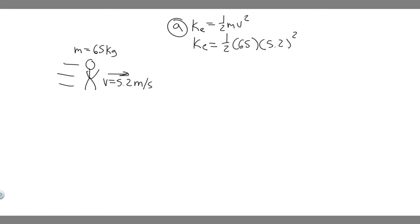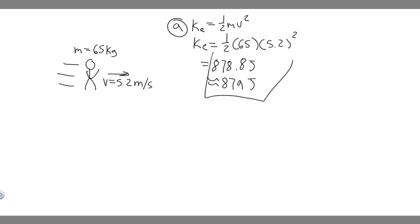When you go ahead and do that, you're going to get 878.8, and the units used to measure kinetic energy when using kilograms and meters per second are joules — so 878.8 joules. You can round however you want; I'm going to round to 879 joules. That's your answer to Part A.